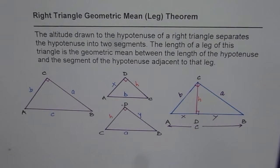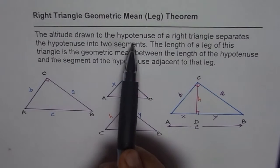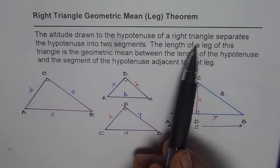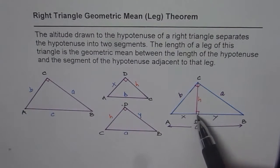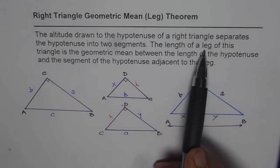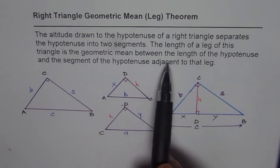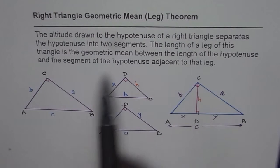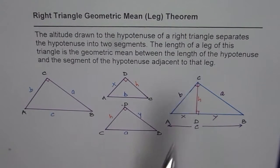I'm Anil Kumar and in this video we'll prove the right triangle geometric mean leg theorem. The theorem states that the altitude drawn to the hypotenuse of a right triangle separates the hypotenuse into two segments. The altitude and the two different segments are shown here. The length of a leg of this triangle is the geometric mean between the length of the hypotenuse and the segment of the hypotenuse adjacent to that leg.